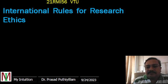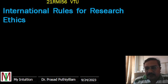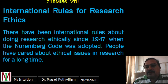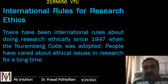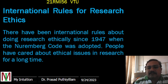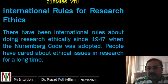Regarding international rules for research ethics: there have been international rules about doing research, which we call ethical guidelines. It was the Nuremberg Code in 1947 that first highlighted the importance of ethical guidelines in research. That was during World War II, where Nazi doctors were conducting experiments on subjects — I won't go into detail, but you can study that topic further.